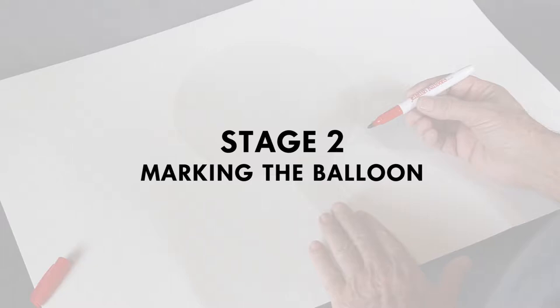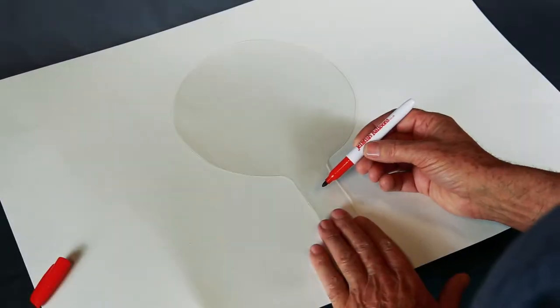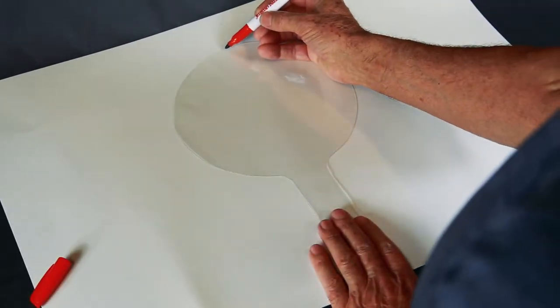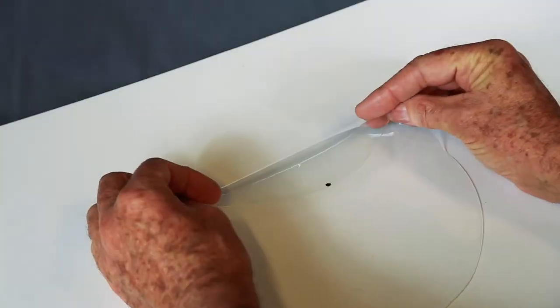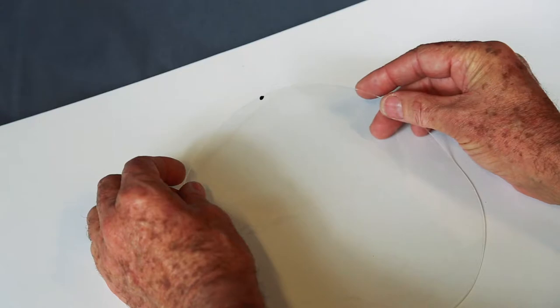Stage 2 is marking the balloon. Take the provided pen and draw a dot on the top centre of the balloon. This will act as a guide for when you place the lights onto the inflated balloon.